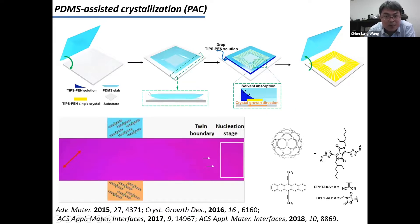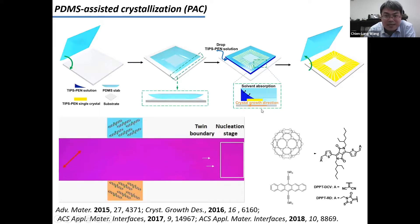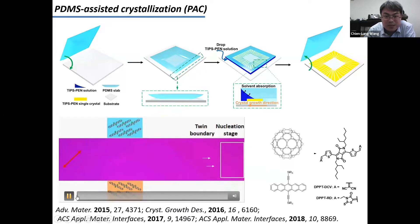We purposely make our PDMS sheet to have some curvature. In this way, when we prepare the same structure, we will have a little gap that allows us to inject the solution of the conjugate molecule. Once you inject the solution into this gap, solvent will be absorbed into the PDMS sheet, the solution will start to supersaturate, and nucleation and crystal growth will happen at the PDMS–silicon wafer contact line. Using an optical microscope, you can see a video of how the crystal grows.